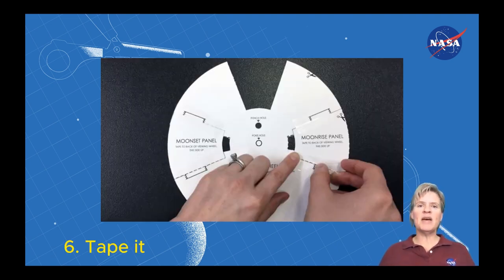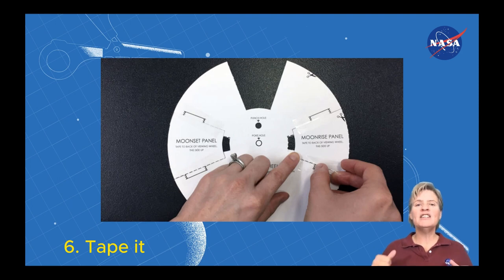Next, take the moonrise panels that you cut out and tape those to the back of the viewing panel.